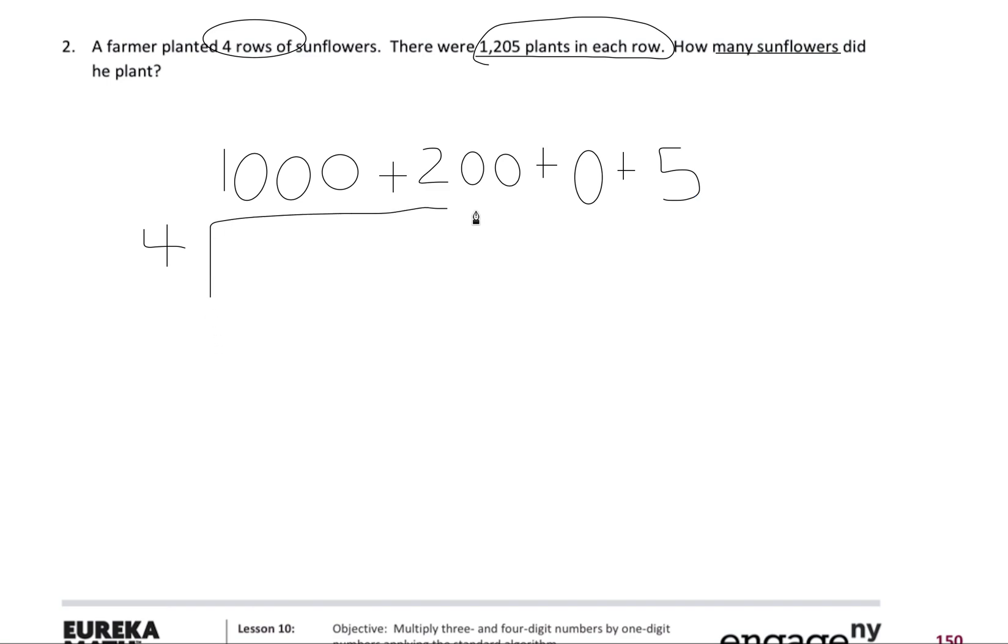So next up I'm going to draw out my rectangle. And I'm going to have a thousand, two hundred, my zero, and then my five that's in my ones.